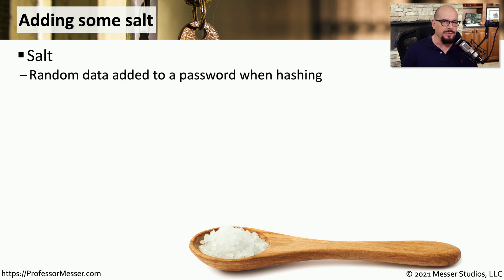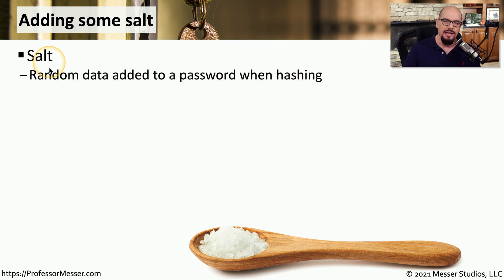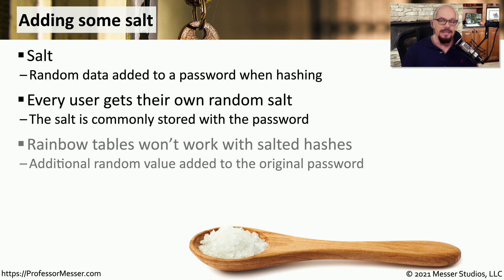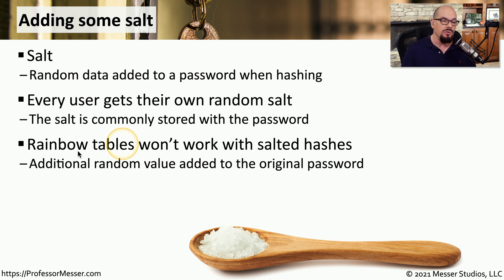To add even more randomization to the hashes we create, we add some additional information during the hashing process called a salt. If you have multiple users storing passwords, every user is going to have a different salt associated with their account. We use that different randomized salt with the password they've chosen to then store a hash value in our database. This means an attacker won't be able to use rainbow tables to quickly determine what the original password might have been. A rainbow table is a pre-computed set of hashes and original values, but if you use salt during the hashing process, those predefined rainbow tables won't be very useful.